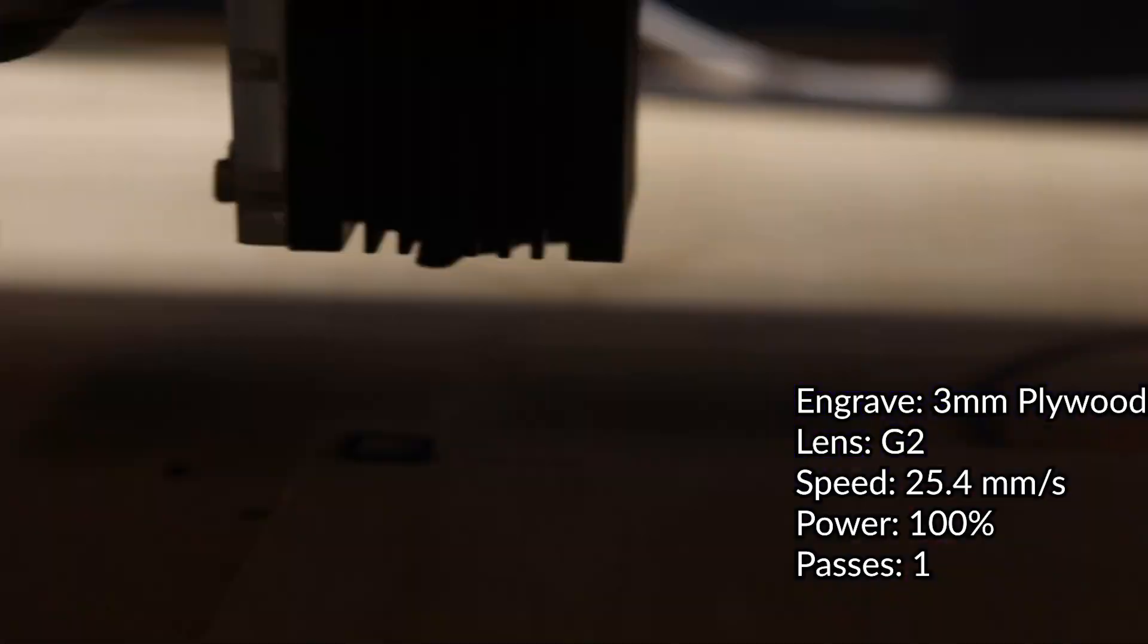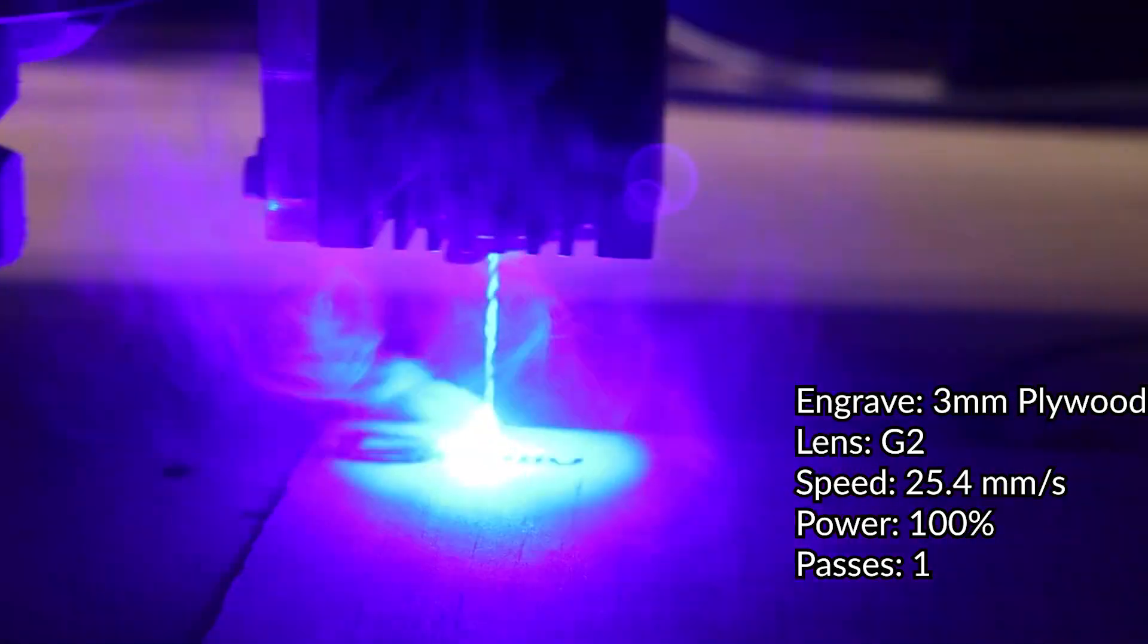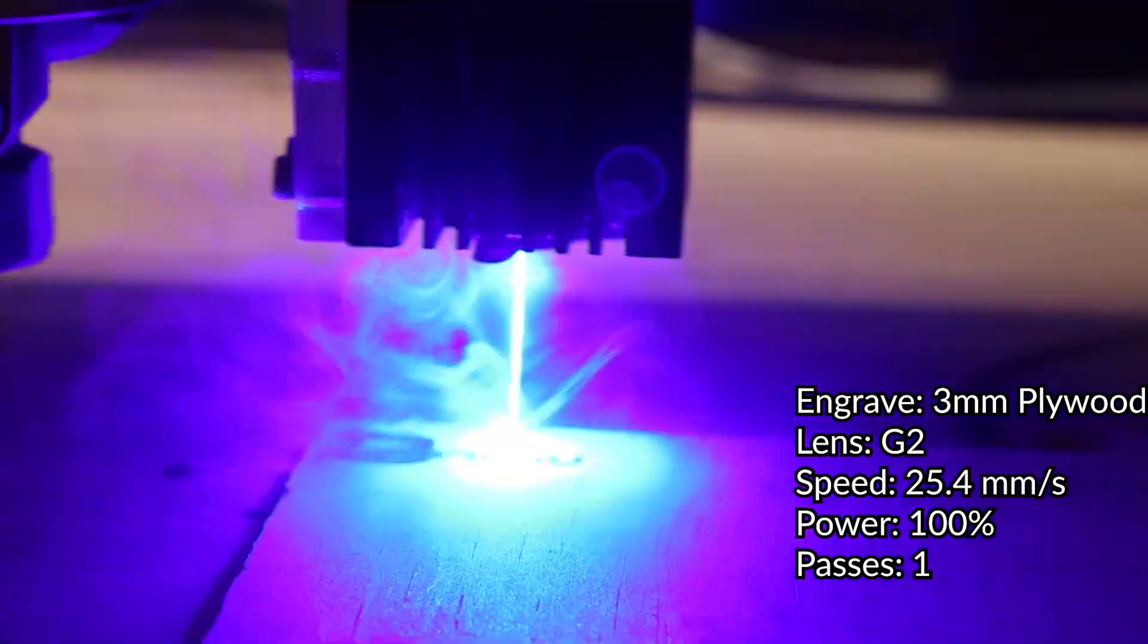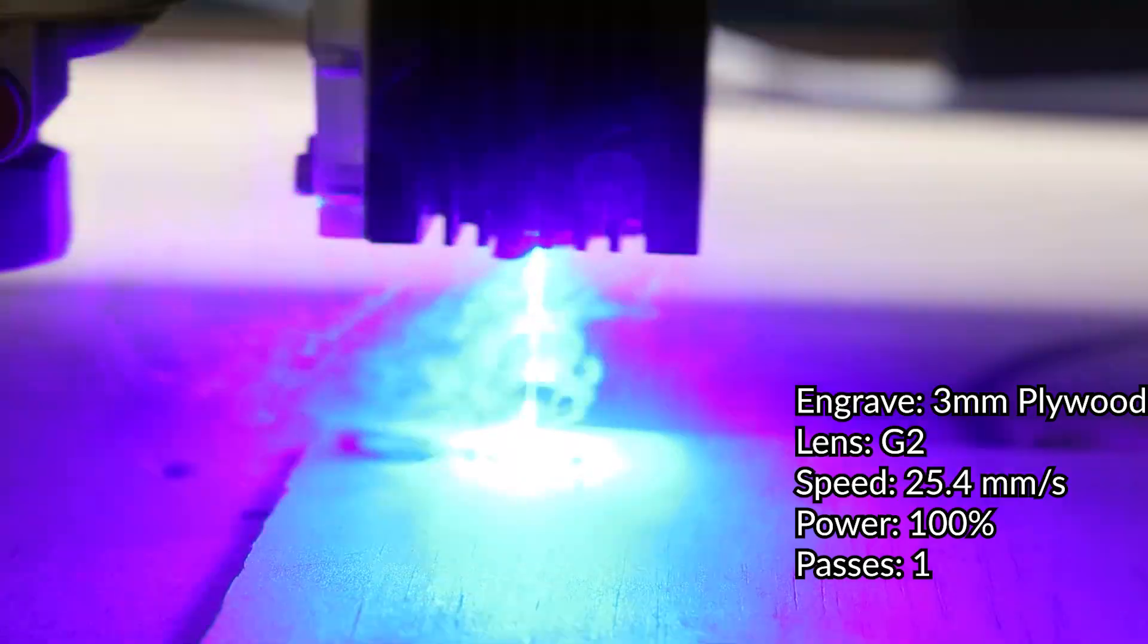So engraving on wood is just super simple. Usually your only issues are it's either too dark or too light, and either lowering the power or raising the power can fix that issue. As you can see, it easily cuts through 3 millimeter plywood.